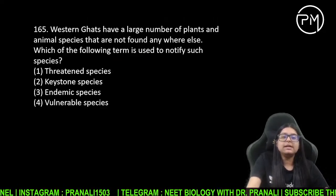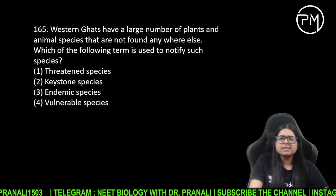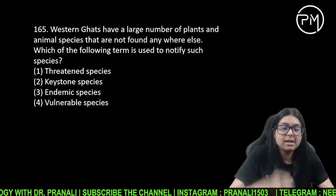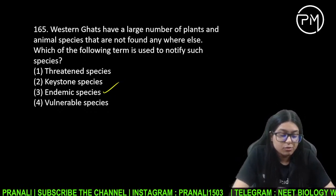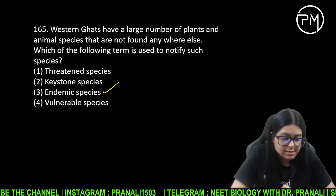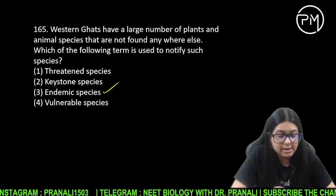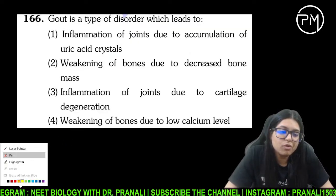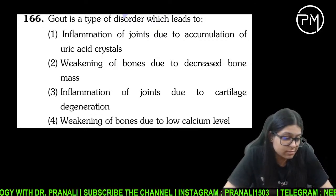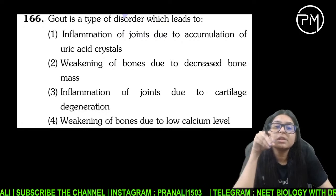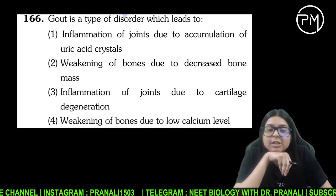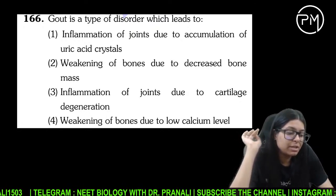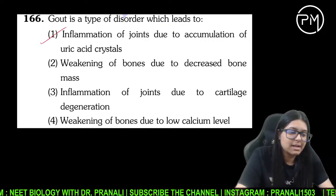Western Ghats mein bahut saare plants aur animals hain jo aur kahin nahi milte — aise plants aur animals jo ek hi jagah milte hain, kahin aur nahi milte, use kya bola jaata hai? Use endemic bola jaata hai. Gout mein kya hota hai? Uric acid ke crystals deposit ho jaate hain joints mein, toh inflammation ho jaata hai — redness, swelling, painful condition. 166 ka answer 1 hai.